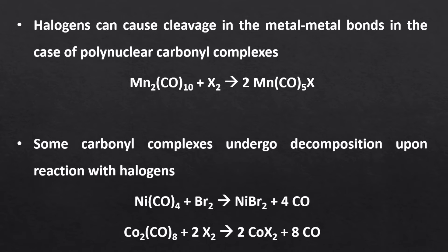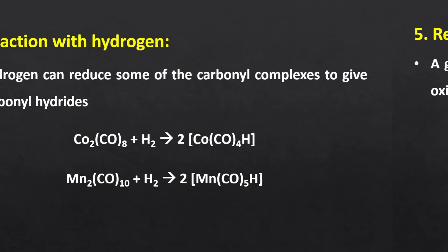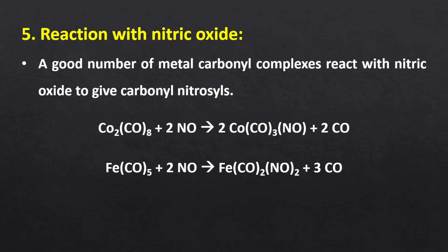Some carbonyl complexes undergo decomposition upon reaction with halogen to give their salts — for example, nickel and cobalt carbonyl complexes decompose to give their halide salts. Next is the reaction with hydrogen: hydrogen can reduce some carbonyl complexes to give carbonyl hydrides, where cobalt and manganese carry a uninegative charge in the product. Finally, a number of metal carbonyl complexes react with nitric oxide to give carbonyl nitrosyls. The reaction between iron pentacarbonyl and nitric oxide involves replacement of 3 carbonyl ligands with 2 nitrosyl ligands.